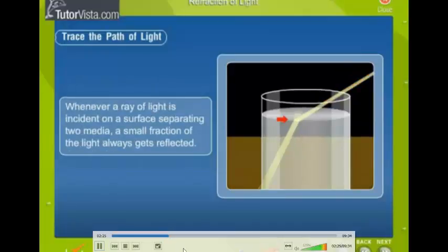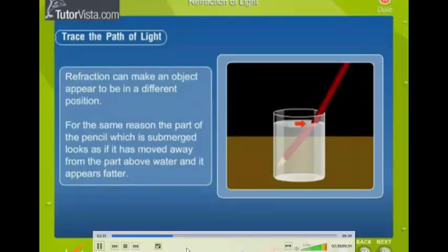Note that whenever a ray of light is incident on a surface separating two media, a small fraction of the light always gets reflected. Refraction can make an object appear to be in a different position. For the same reason, the part of the pencil which is submerged looks as if it has moved away from the part above water and it appears fatter.